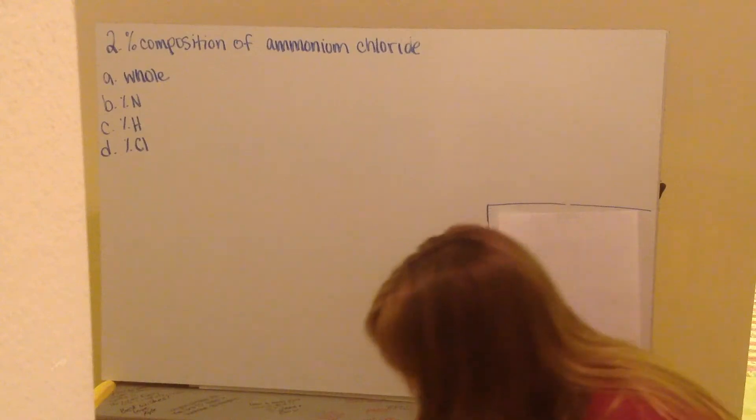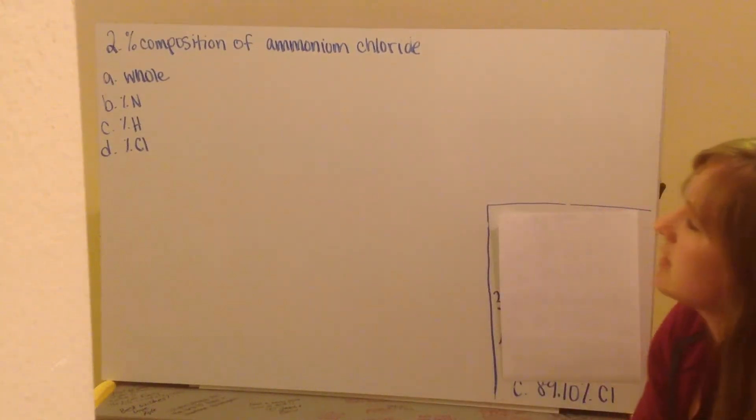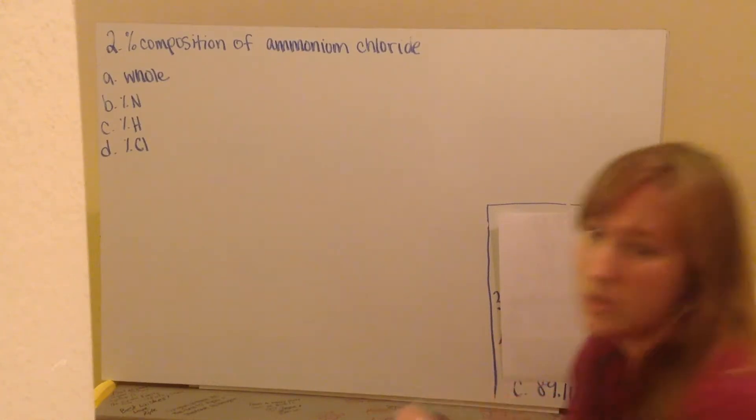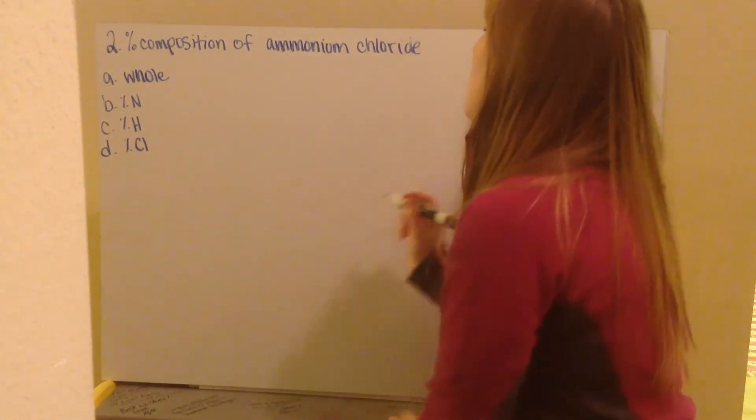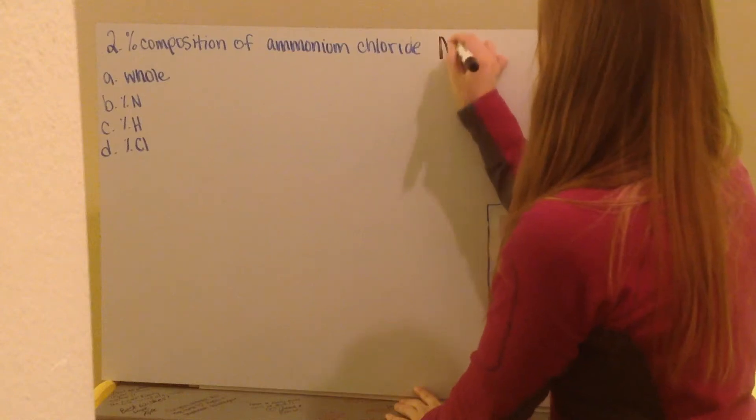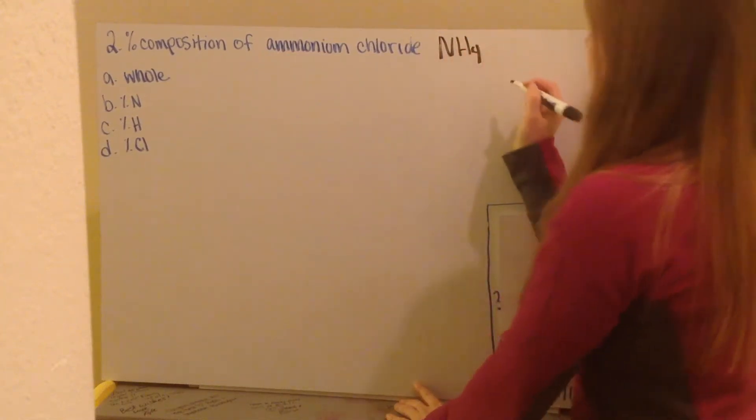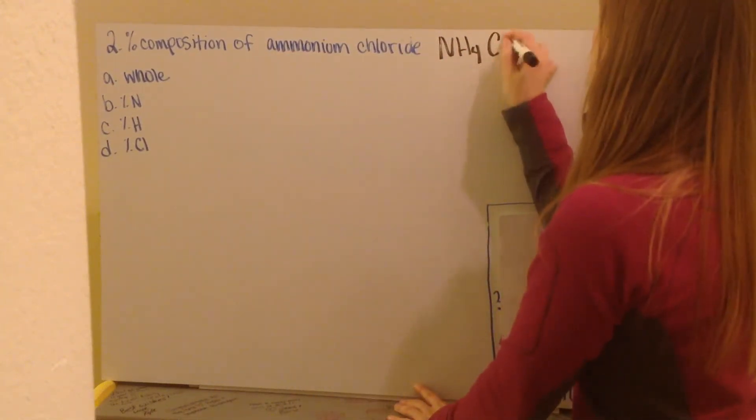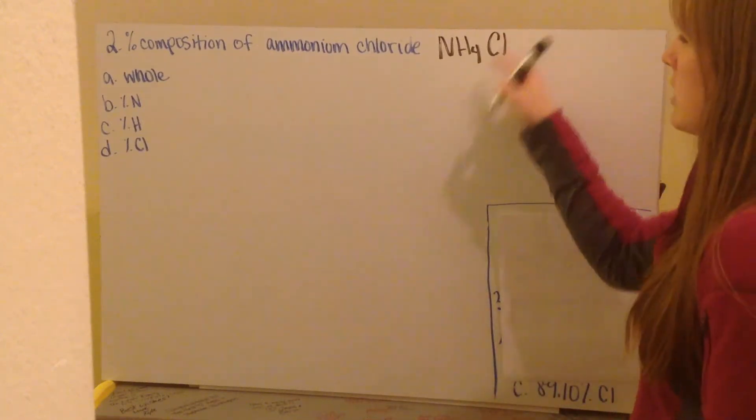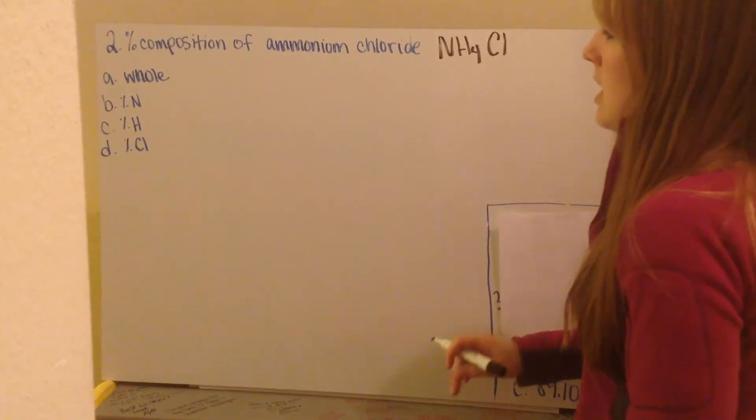Let's walk through your second example. Your second example tells you to find the percent composition of ammonium chloride. We first need to know what is ammonium chloride. Ammonium is NH4 with a positive 1 charge. Chlorine is Cl with a negative 1 charge. I crisscross them and get NH4Cl.